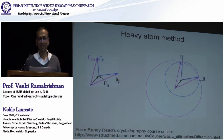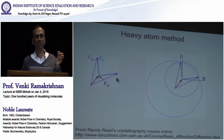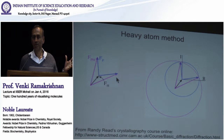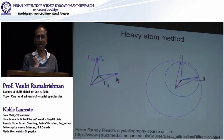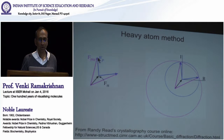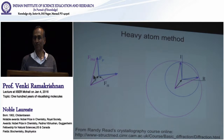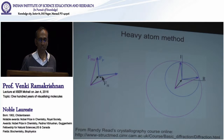The genius of Max Perutz was that he realized that even though you have only a single gold or mercury atom among a few thousand light atoms, you would still be able to see a difference in the signal. From the difference, you could figure out where the gold or mercury atom was. When you've added the gold atom, the resulting scattering should be the sum of the scattering from the heavy atom plus the scattering from the protein.